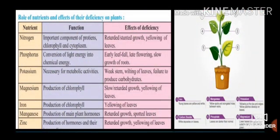Role of Nutrients and Effect of Their Deficiency on Plants — Nitrogen: important component of proteins, chlorophyll, and cytoplasm; deficiency causes retarded/stunted growth and yellowing of leaves. Phosphorus: involved in conversion of light energy into chemical energy; deficiency causes early leaf fall, late flowering, and slow growth of fruits. Potassium: necessary for metabolic activities; deficiency causes weak stem, withering of leaves, and failure to produce carbohydrates. Magnesium: function is production of chlorophyll; deficiency causes slow, retarded growth and yellowing of leaves.